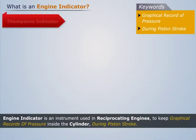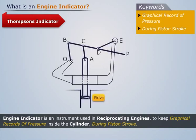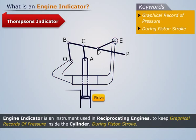Thompson's indicator. Its line diagram consists of the links OB, BD, DE and EO. The tracing point P lies on the link BD produced. With variation in pressure, it works like this.